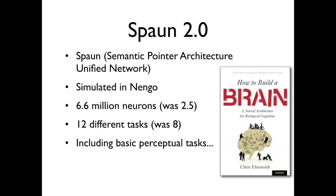Spaun does lots of different tasks — 12, though counting tasks is a bit of a weird thing to do, especially since one of them is instruction following. Here's a basic perceptual task where it looks at images and writes a zero if they're from different categories or a one if they're the same. So it sees two monkeys, writes a one. Show it two dogs — same category. It has an eye as its entire perceptual system and an arm as its motor output system.